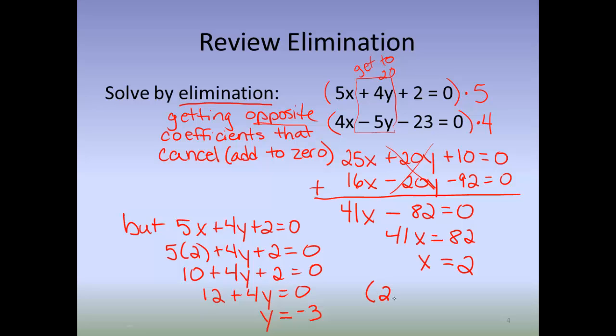And again, you write this as an ordered pair, 2, negative 3. So there's your review of elimination. You need to do some multiplying in order to get coefficients that are opposite, so when you add them together, they add up to be 0.